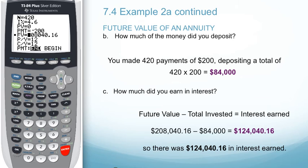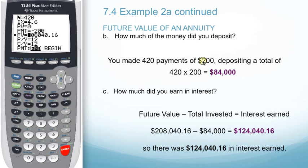For part B, we want to look at how much of the money we actually deposited. We made 420 payments of $200. That gives us 420 times 200, which would be a deposit totaling $84,000.